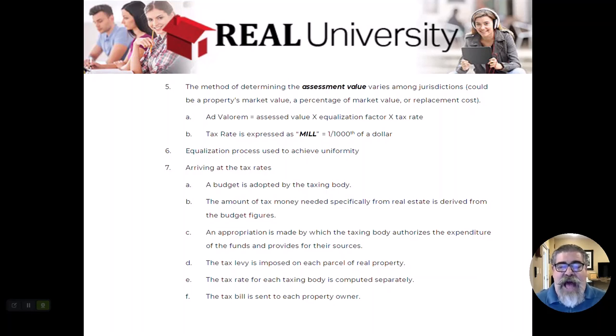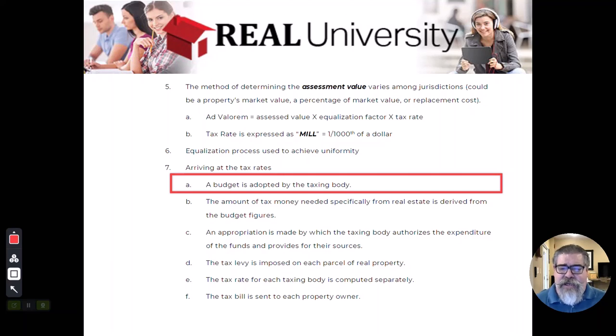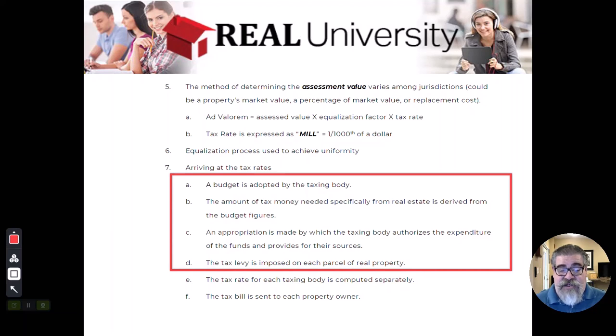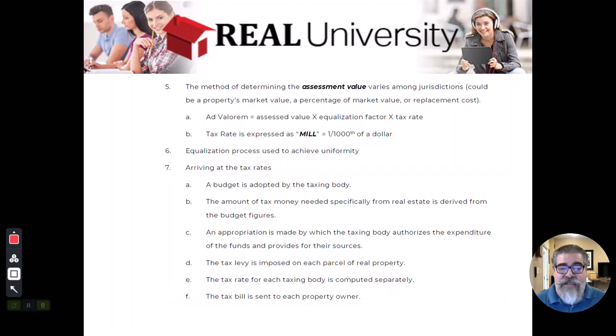Now, how they arrive at that taxing rate is very similar here, because what they do is they just do a mathematical process. They adopt a budget. How much do we need? Well, we need $13 million to run this. Then they figure out within that budget, they divide it by the number of properties in there, and that gives them some number, and then they levy it against that real estate parcel. They send you a bill, and then you pay that property tax. That's how they arrive at that tax rate.